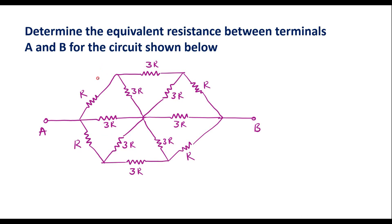In this video, let me consider one example to find equivalent resistance between the terminals. Determine the equivalent resistance between terminals A and B for the circuit shown below. This is the given circuit we are supposed to find the equivalent resistance between terminals A and B.